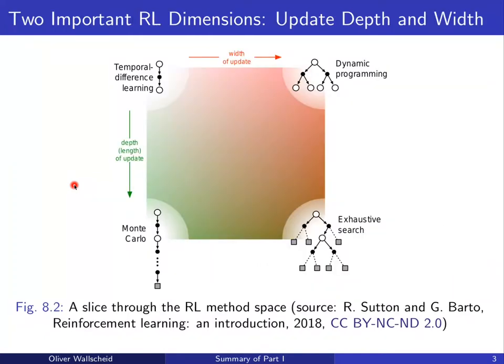Two very important dimensions of reinforcement learning are update depth and width. Depth refers to how many sampled state-action transitions are taken into account, with the two extreme cases being Monte Carlo updates — where we take into account the entire state-action transitions until episode termination — or temporal difference learning, where we take into account just one sampled state-action transition.